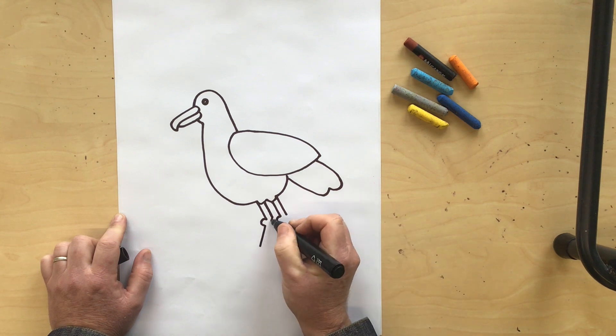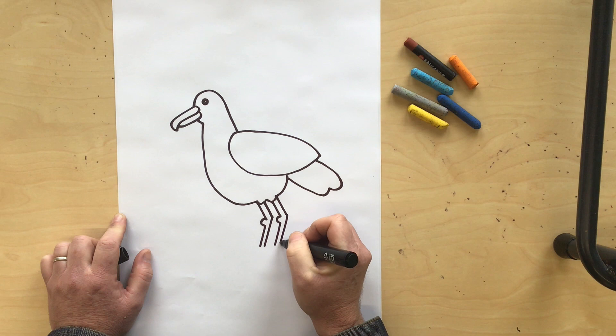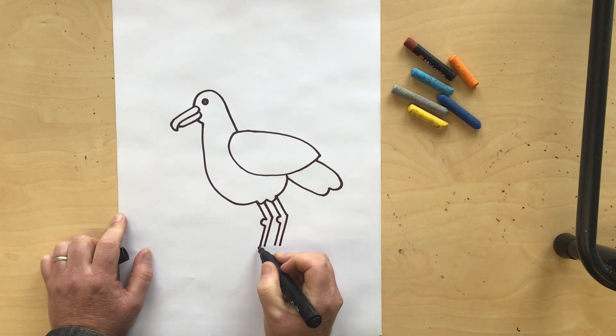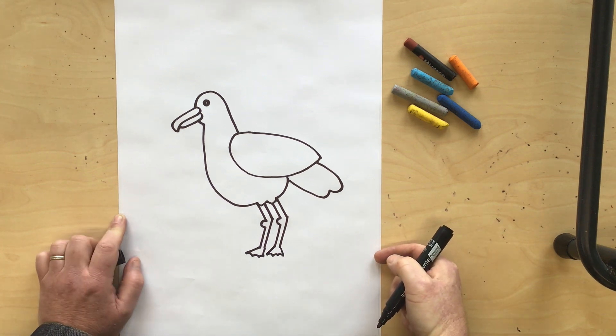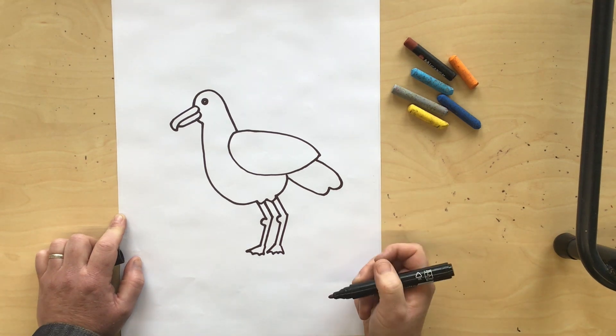And now for the feet, let's just bring some lines out with some little wiggles and we have a seagull's foot. We want this seagull to be by the beach so we're gonna put him on a log.